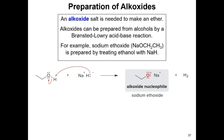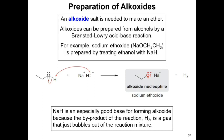Ether synthesis requires an alkoxide ion reacting with alkyl halides. These alkoxides can be prepared from alcohols via a proton transfer reaction, or Brønsted-Lowry acid-base reaction. For example, an alcohol reacting with an extremely strong base like sodium hydride deprotonates the hydrogen from the alcohol, forming the alkoxide ion — an extremely strong nucleophile. The byproduct is hydrogen gas, which can easily be isolated from the reaction mixture.